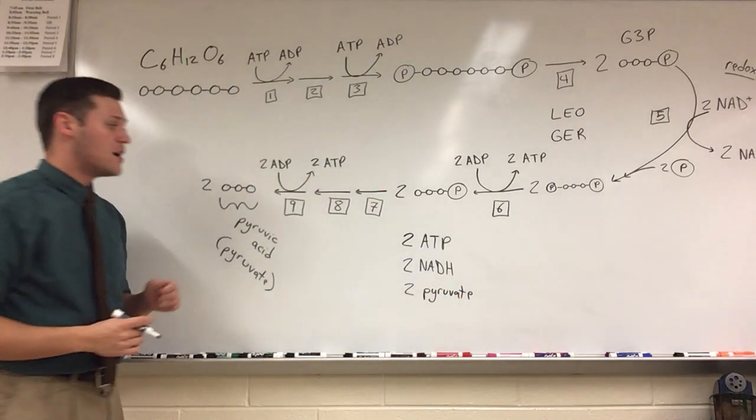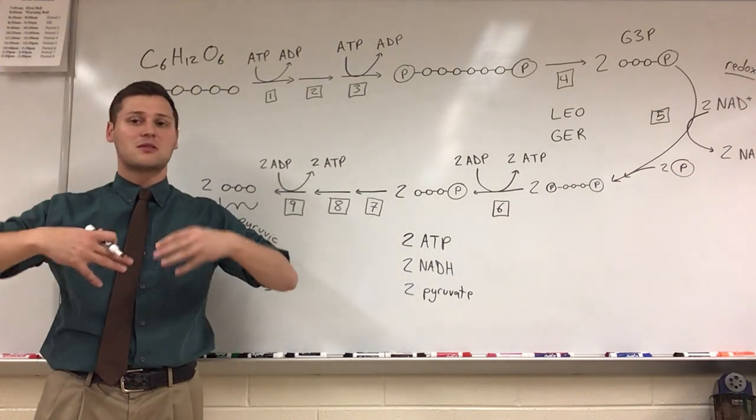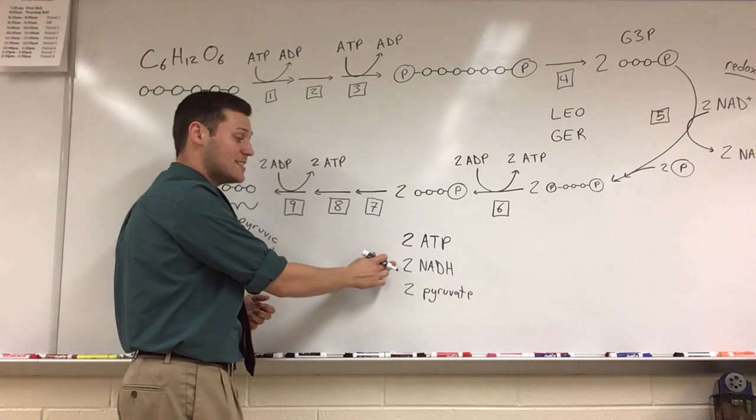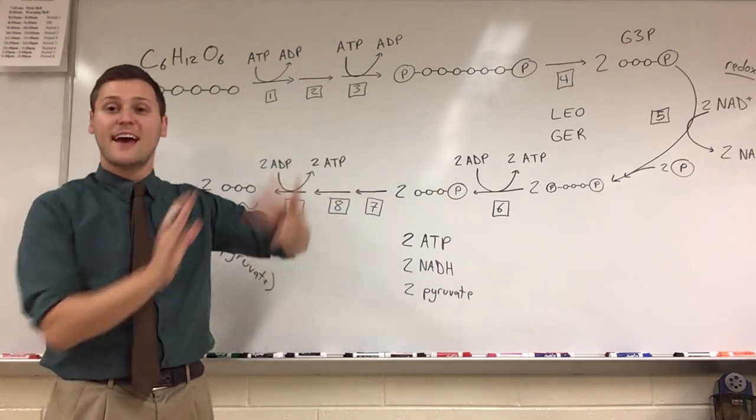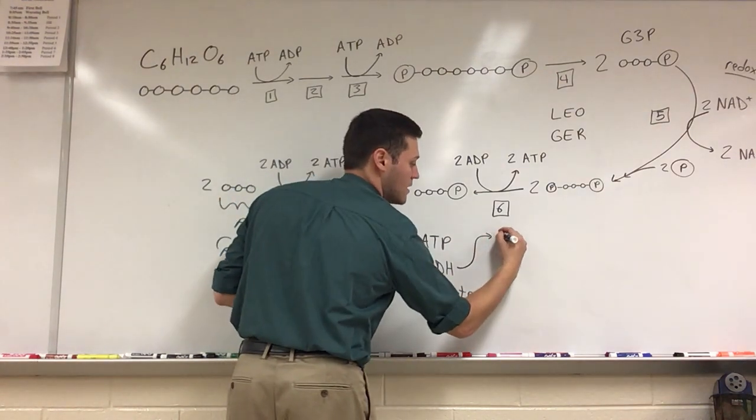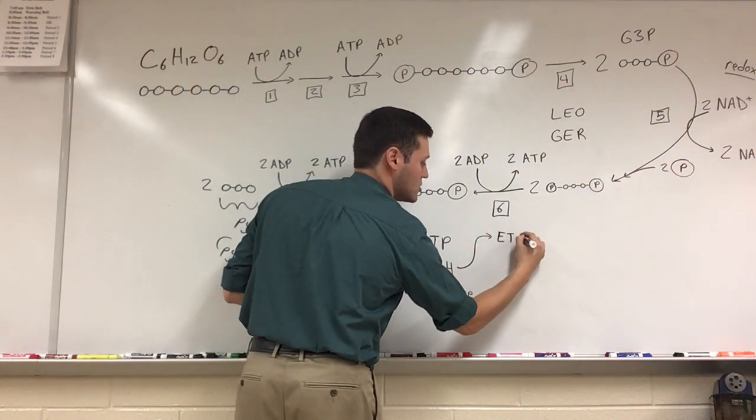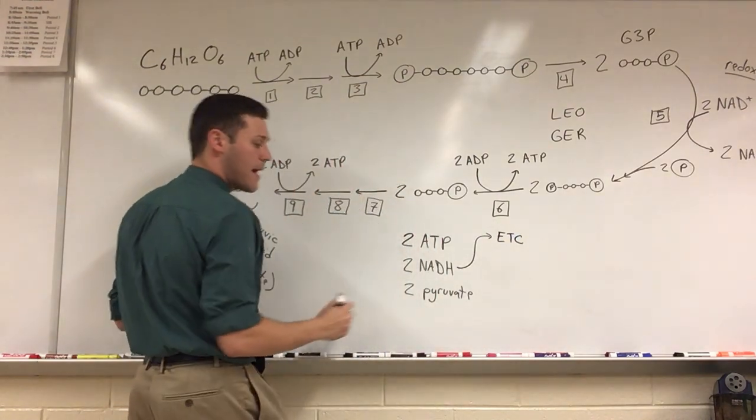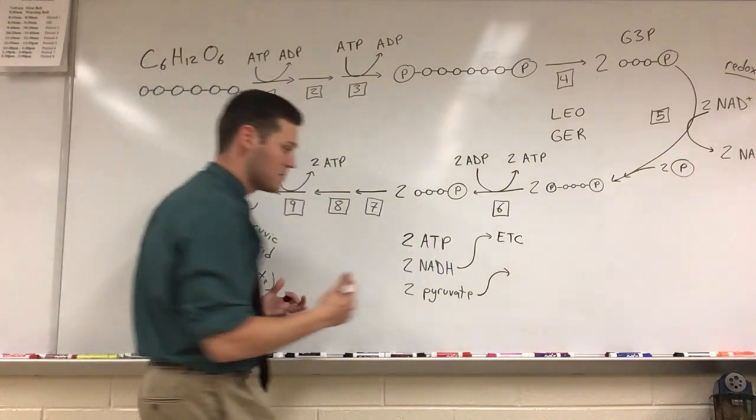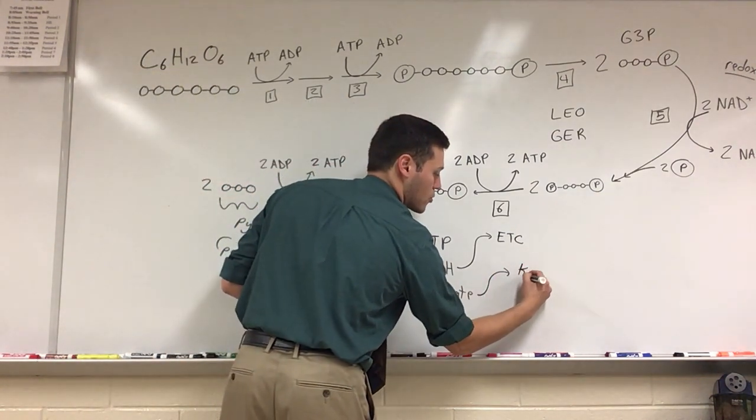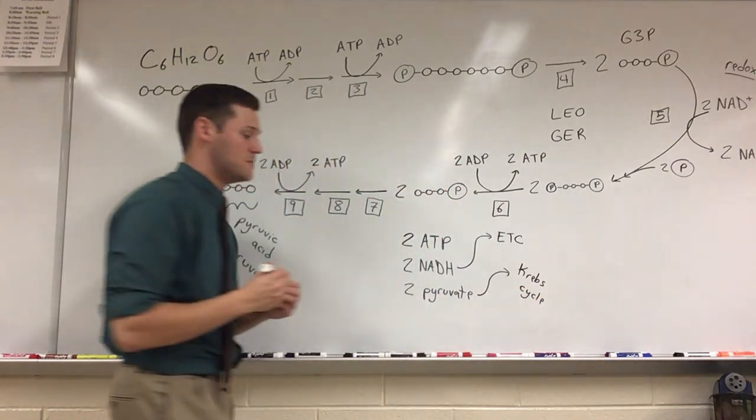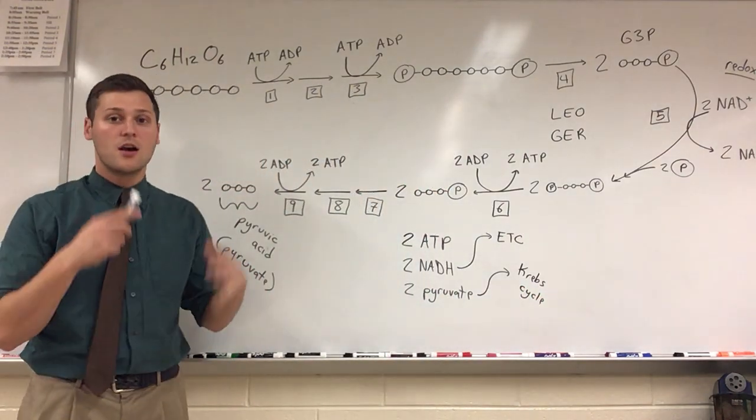So two ATP goes to the cell to be used for some type of cellular work. Two NADH, those are electron carriers, so they're going to head off to the electron transport chain in the mitochondria. And the two pyruvates are headed to the next stage of cellular respiration, or the Krebs cycle. Also called the citric acid cycle. So that is glycolysis.